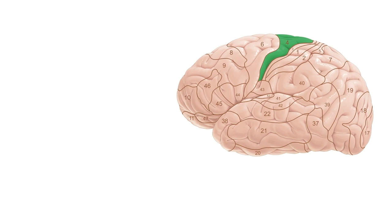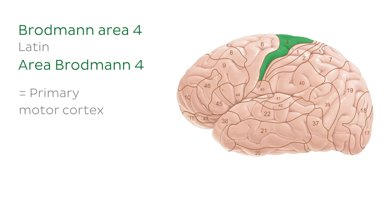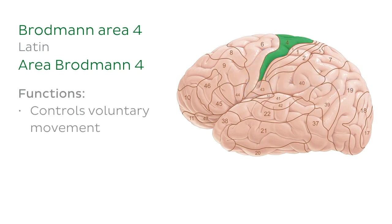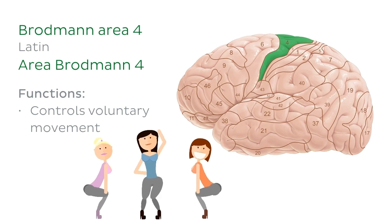Now let's have a look at the key Brodmann areas found in the frontal lobe, starting with Brodmann area 4, which is also known as the primary motor cortex. Brodmann area 4 is located in the precentral gyrus and controls voluntary movement. So when you want to impress your friends with your dance moves, this is the area of the brain that you use.